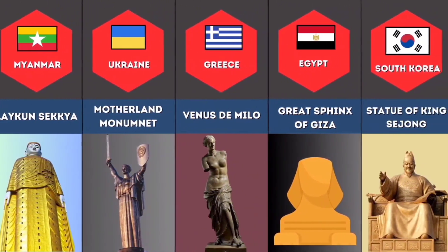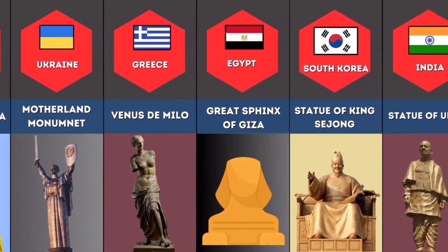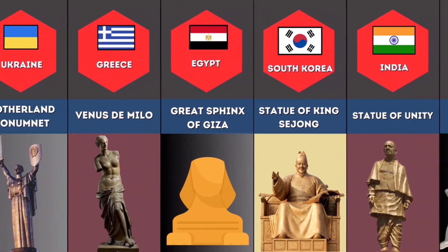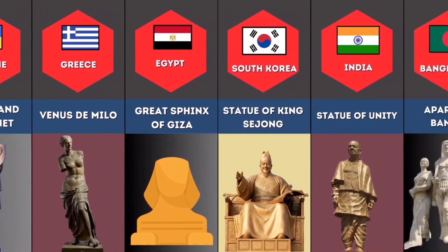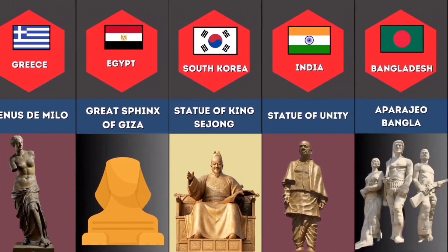Egypt: Great Sphinx of Giza. South Korea: Statue of King Sejong. India: Statue of Unity. Bangladesh: Aparajeyo Bangla.